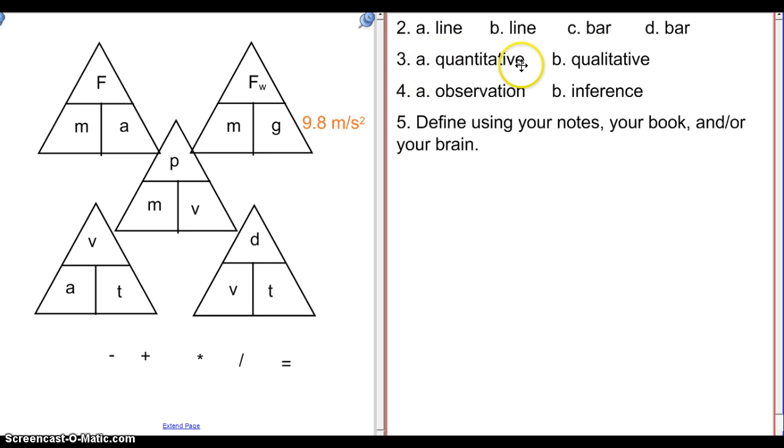For number three, remember that quantitative is numbers, and qualitative is other types of descriptors. For number four, an observation is just based on what you see. An inference is when you guess something beyond that. For number five, I'm asking you to define these using your notes, your book, and or your brain. These are all words that we have experienced during the course of the semester.